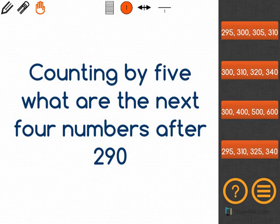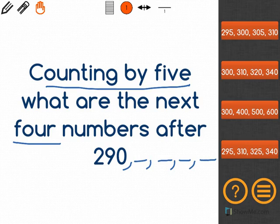So I know that I'm counting by 5, and I know I'm looking for 4 numbers after 290, so I'm going to find the next 4 numbers in the sequence.